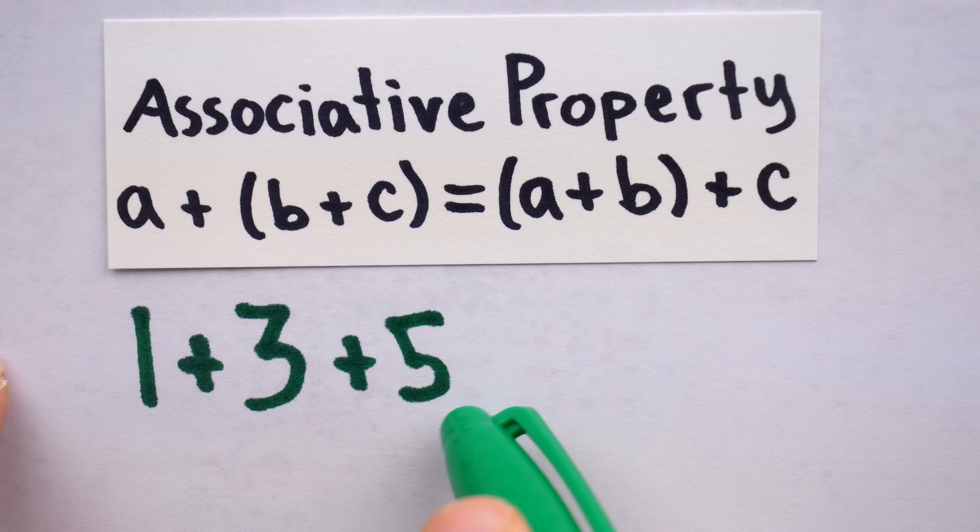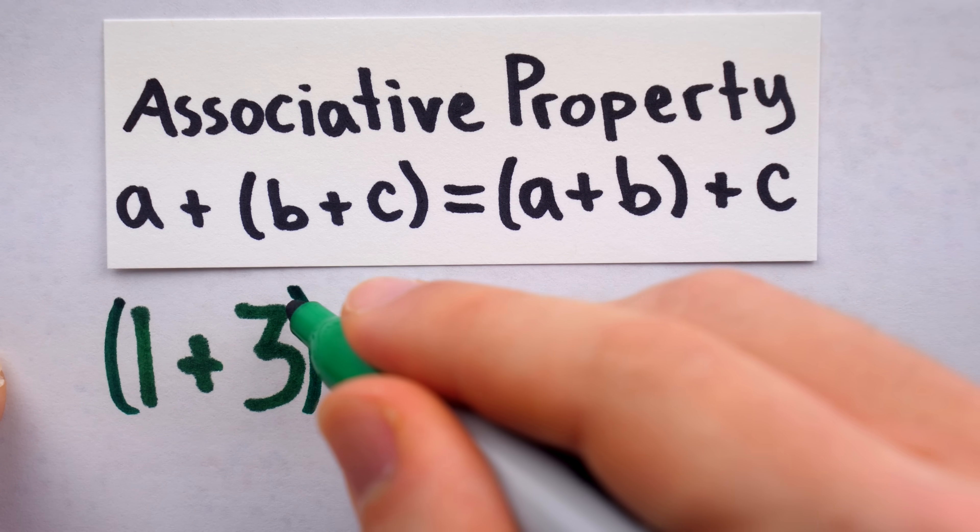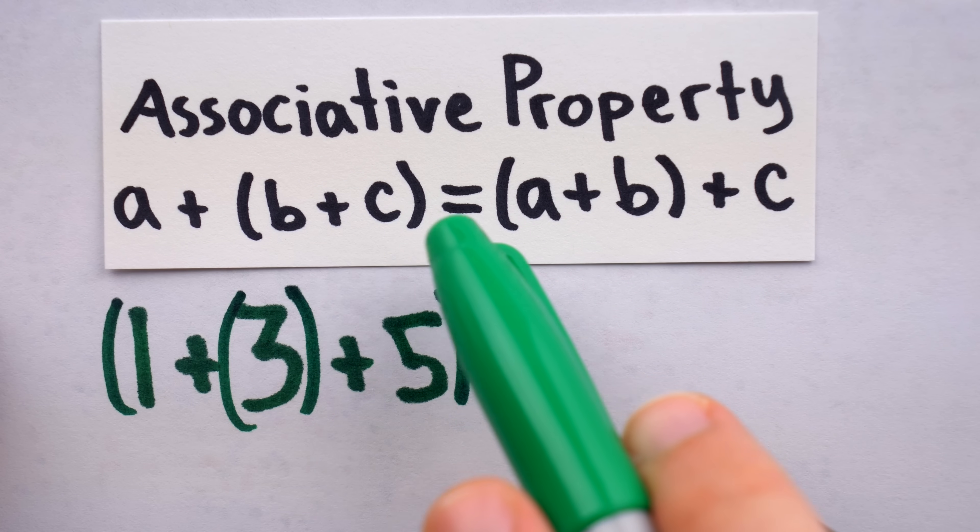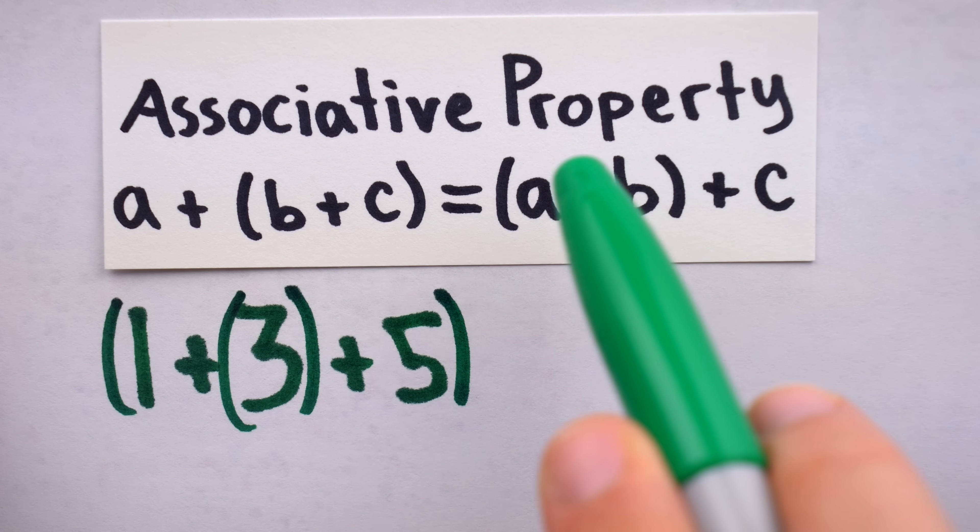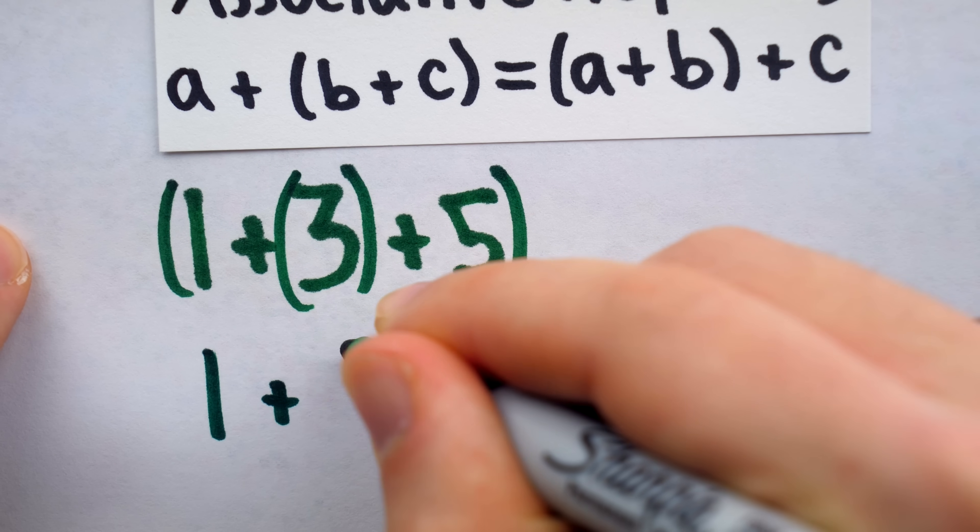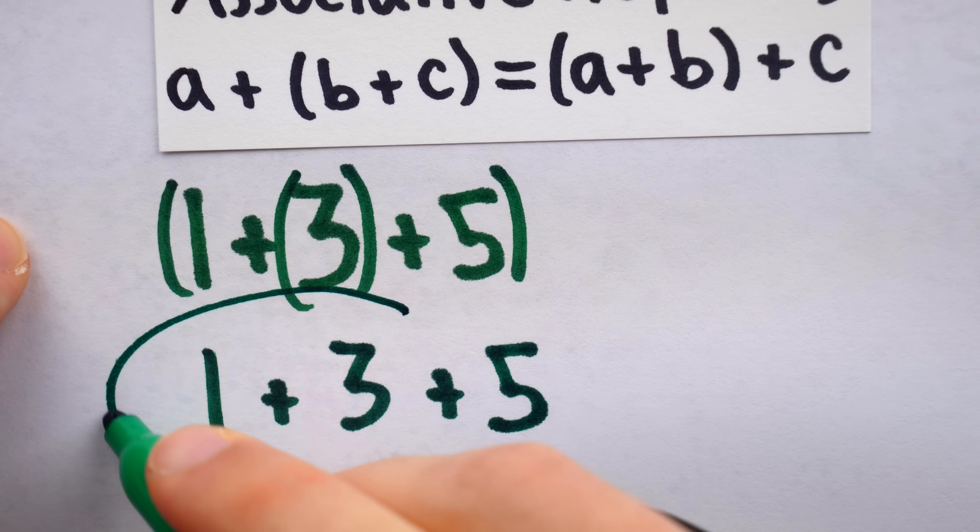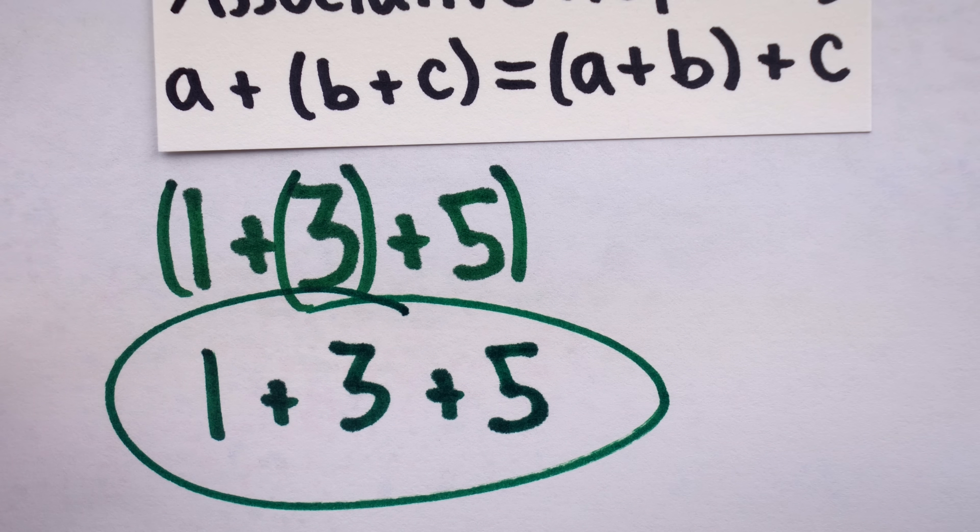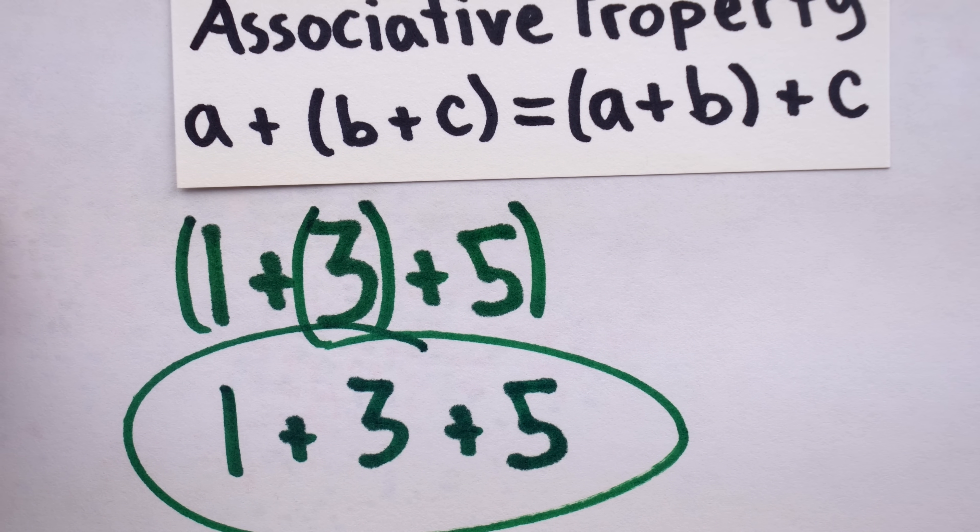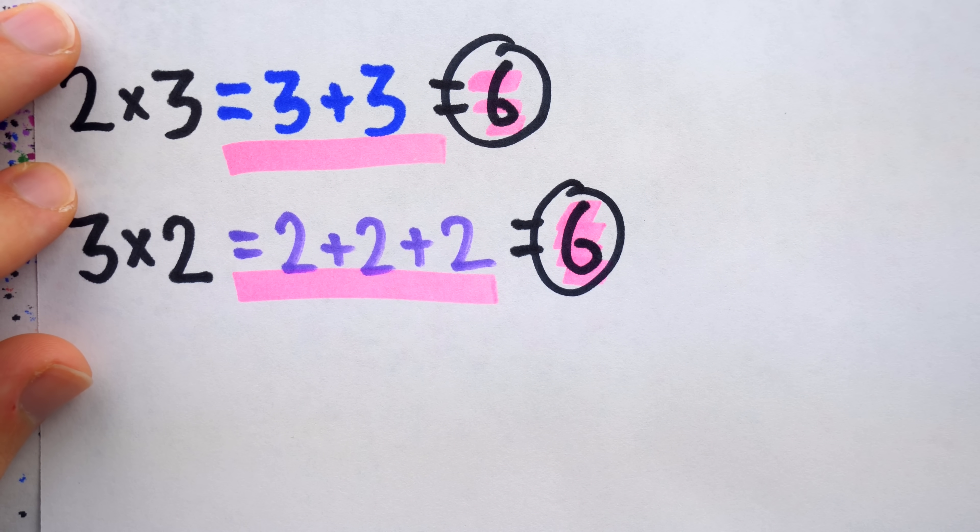which means we either need to do one plus three first, or we need to do three plus five first. The associative property tells us that in fact, it doesn't matter how we do it, we're going to get the same result, which importantly means the expression one plus three plus five itself is not ambiguous. It doesn't need any parentheses, because adding parentheses wouldn't change its value. I think I've made my point enough. The very first step to teaching important properties is to not trivialize them.